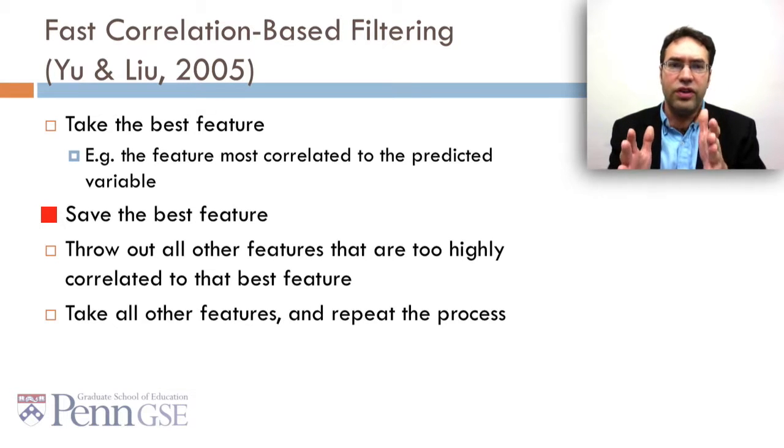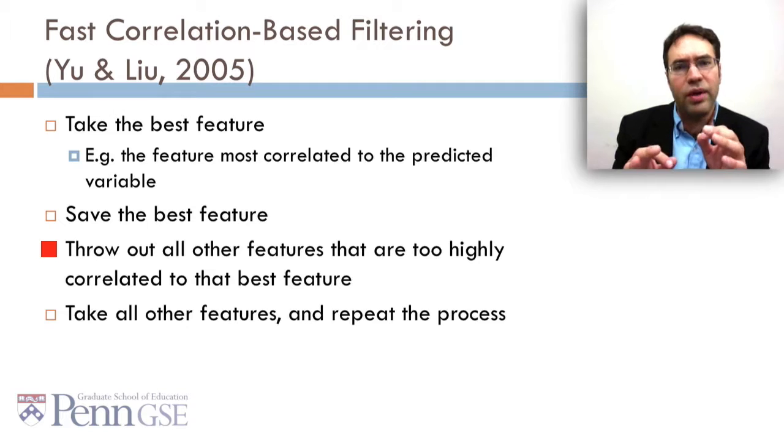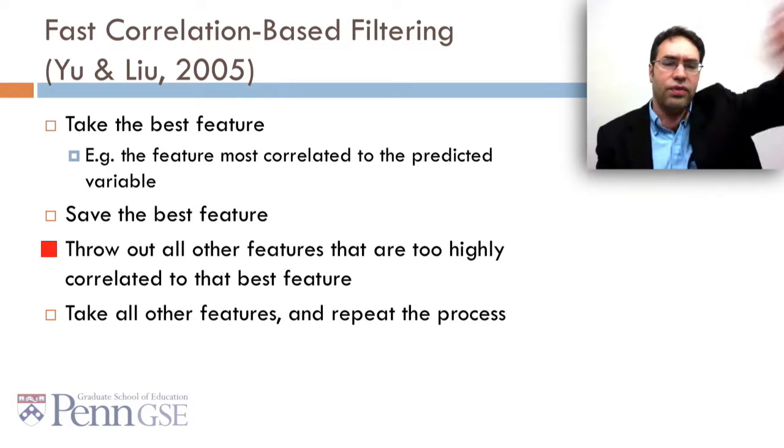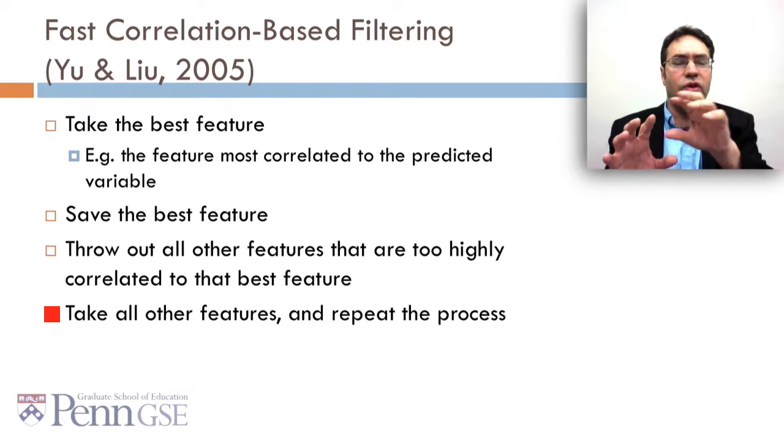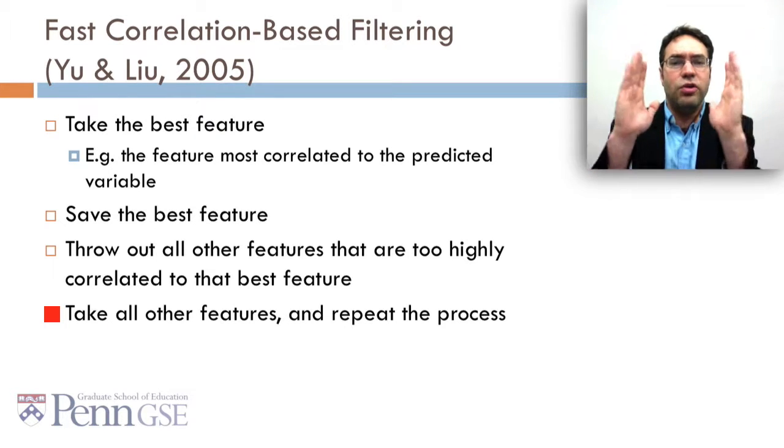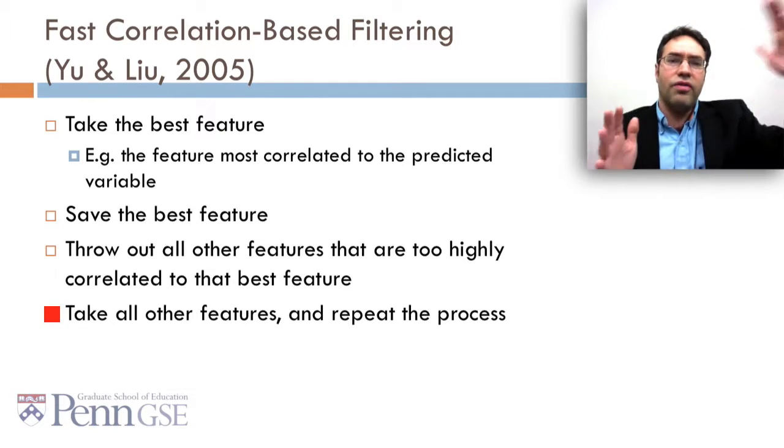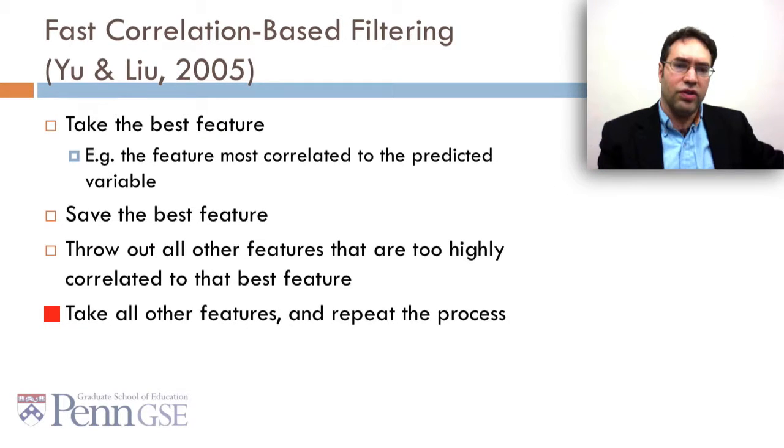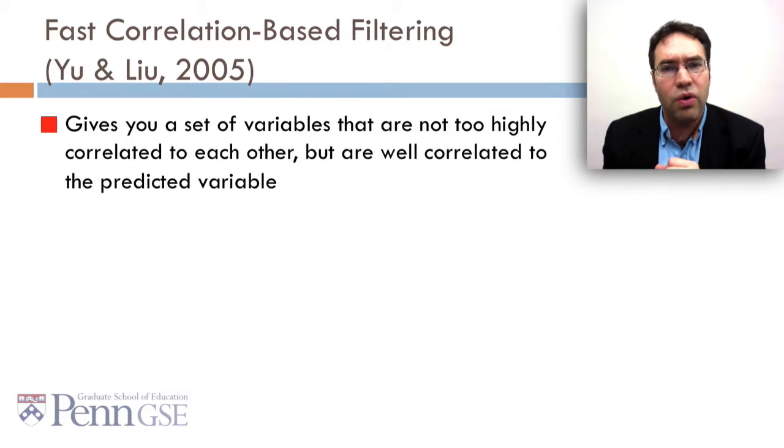Then you're going to take each of the features and look at how highly they correlate to that best feature. Anything that correlates to that best feature above your threshold, you're going to throw it out. Then you take all the features that remain, not the best feature and not the ones that correlate too much to the best feature, and you repeat the process in them. You take the second best feature and then you throw out everything that correlates too well to that second best feature. This gives you a set of variables that aren't too highly correlated to each other but are well correlated to the predicted variable, or at least relatively well correlated to the predicted variable.